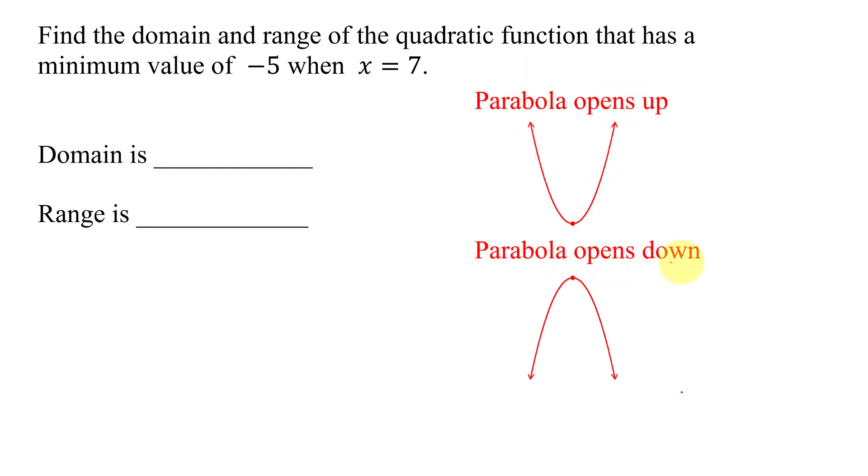When the parabola opens down, the y value of the vertex is the maximum value of the function and this function does not have a minimum value as it keeps going down forever.